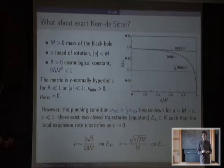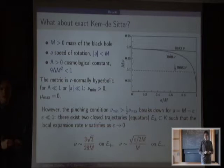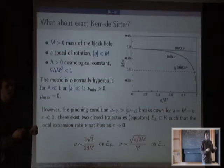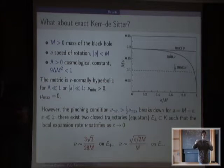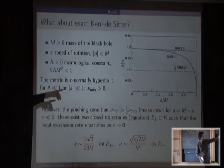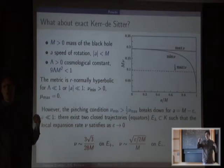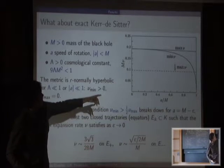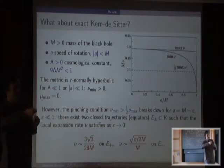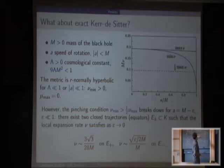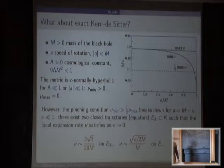For exact Kerr-de Sitter, you can actually compute these quantities. For a non-rotating black hole, the expansion rates are the same everywhere. When it starts rotating, the trapped set elongates and a part of it comes close to the event horizons, producing a very slow decay rate. From around A = 0.05 or 0.06, the pinching condition will be violated and the bands will overlap — most of the results still apply but the band structure does not.